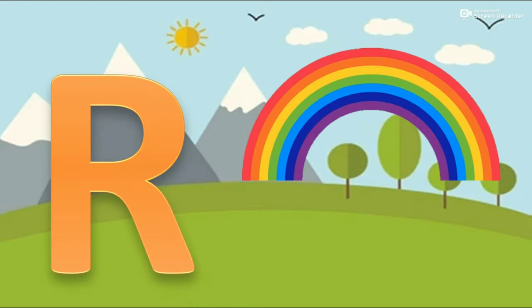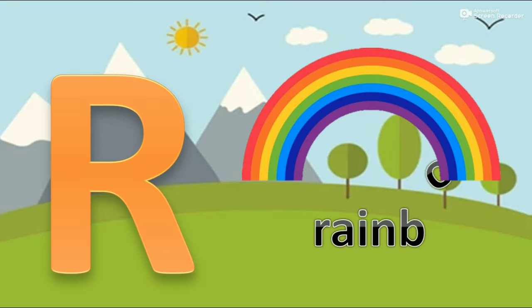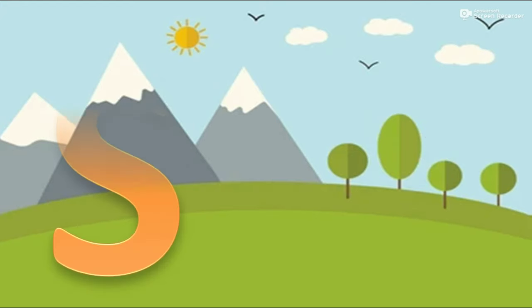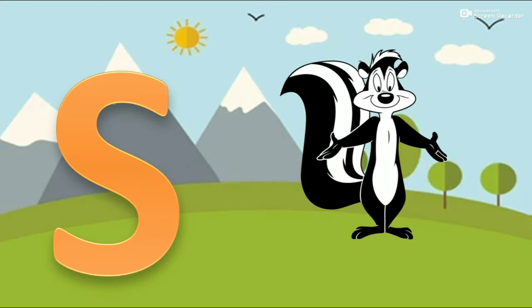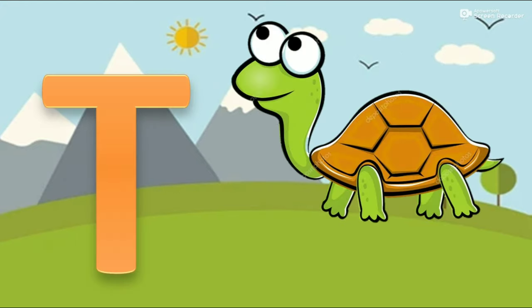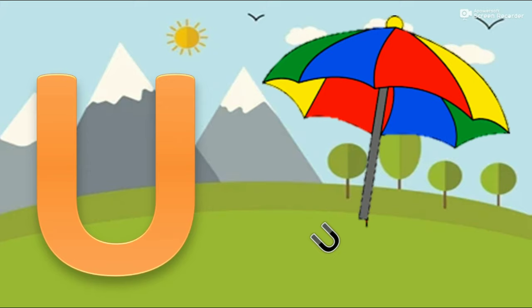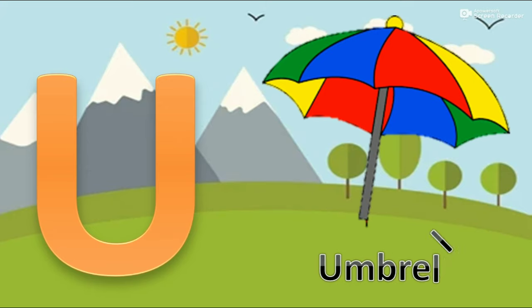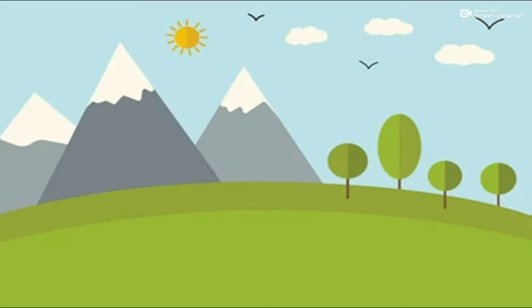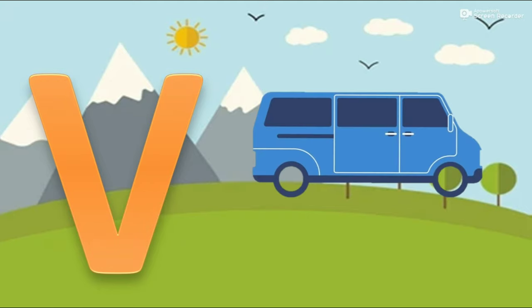R for rainbow. S for skunk. T for turtle. U for umbrella. V for van.